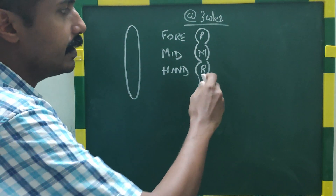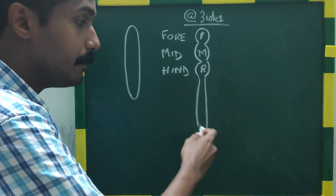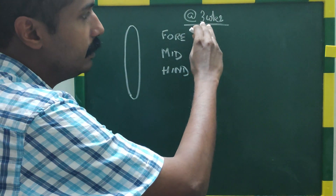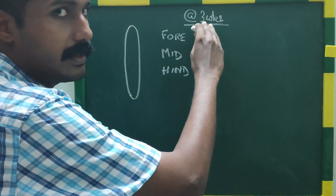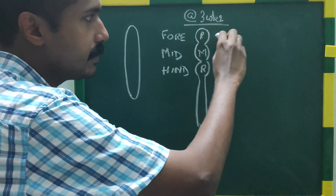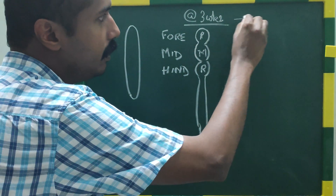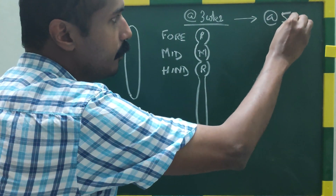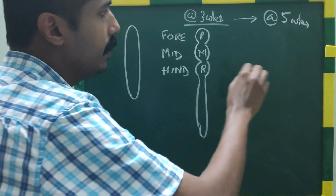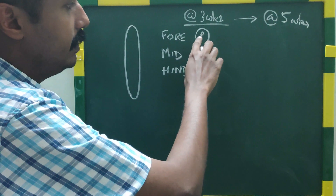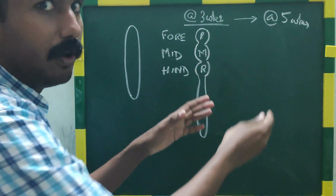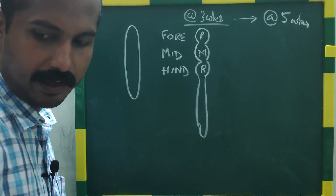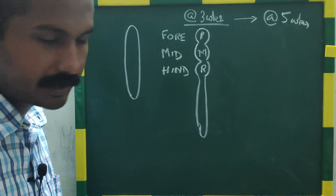Now, what happens to these 3 vesicles? The remaining part remains as a tube — that is also important. This is occurring at the age of 3 weeks. After a while, at around 5 weeks of age, these 3 will evolve into 5 brain vesicles.